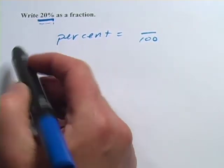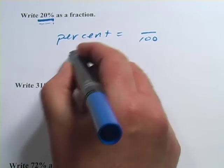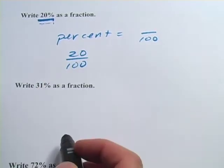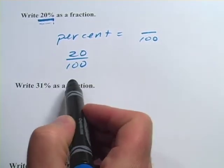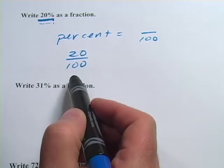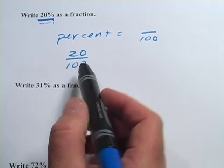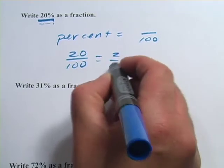If you see 20%, that means 20 over 100. So, you've got a fraction. Although, I wouldn't stop there because that's not reduced to simplest terms. I could divide the top and the bottom by 10, and I would get 2 over 10.